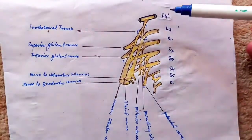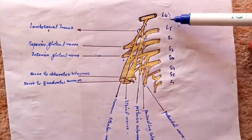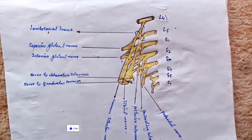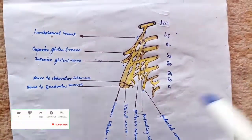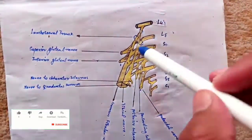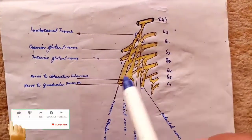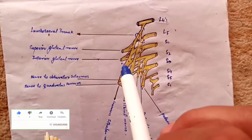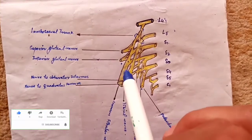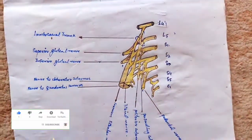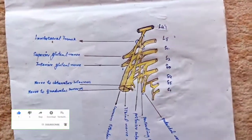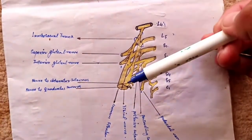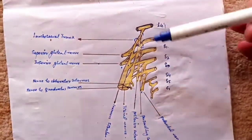The sacral plexus is formed by the L4, L5, S1, S2, S3 and S4 spinal nerves. Due to this combination of spinal nerves, the sacral plexus is divided into two divisions: the anterior division and the posterior division, also called the ventral and dorsal divisions. The ventral division and the dorsal division form the various nerves.